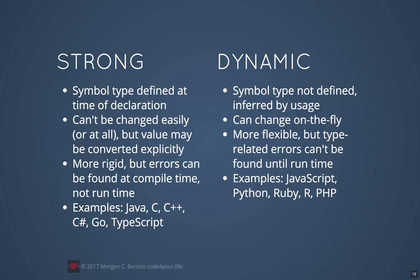Some examples of strongly or statically typed languages are Java, C, C++, C#, Go, and TypeScript.